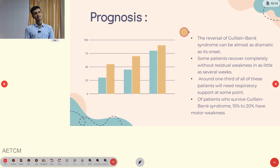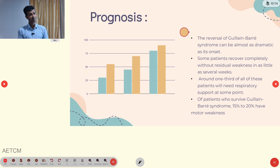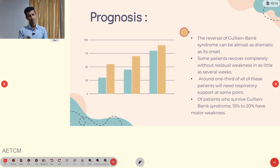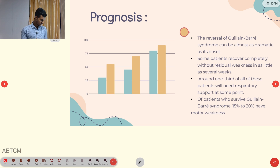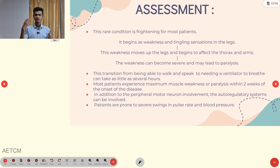Prognosis-wise, onset is dramatic but many recover. However, some patients recover completely without residual weakness in several weeks. Around one third of cases need respiratory support at some point due to respiratory muscle paralysis. In GBS, 15 to 20 percent have motor weakness affecting extremities and respiratory muscles everywhere, requiring supportive care for their lifetime.